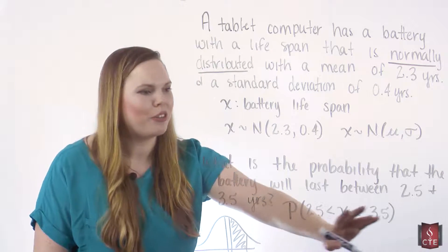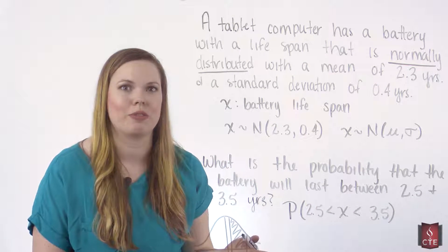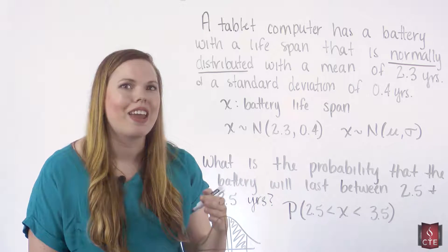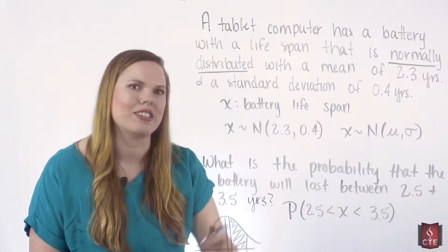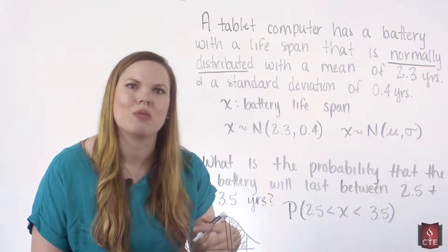Alright, so for a between problem, we need two z-scores. We need the z-score of each x, because we want to standardize this using the standard normal distribution so that we can use our table.